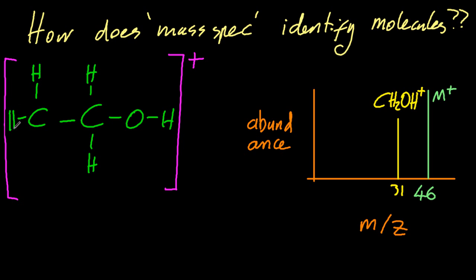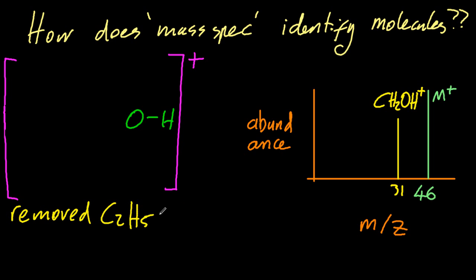So don't worry too much about the height of the lines. All right, let's make ethanol plus again and do another scissor cut. Let's say here, and we cut off the ethyl group, leaving OH+. Now, OH+ is unlikely, but you don't know that. You don't need to know that. But there'd still be a little peak there. So I've lost 29 from my M+. So that gives me a line at 17.